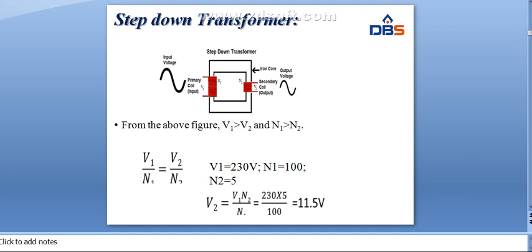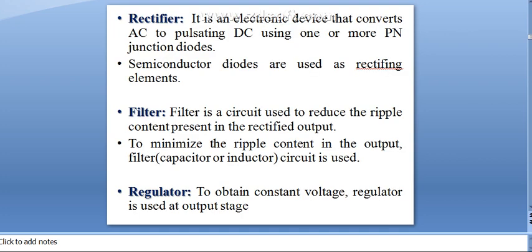In the regulated power supply, the first block is the step-down transformer. The 230 volt main voltage is converted to some lower voltage, depending on the number of turns. The output of the step-down transformer is then applied to the rectifier section. The rectifier is an electronic device that converts AC to pulsating DC.